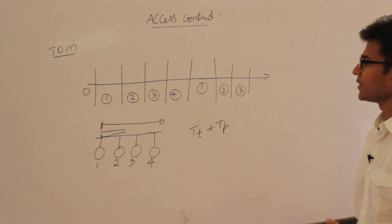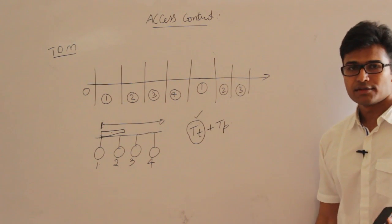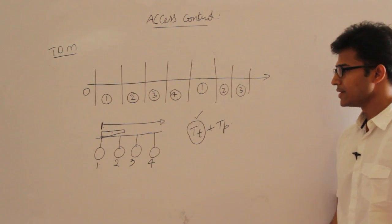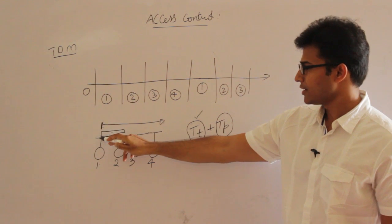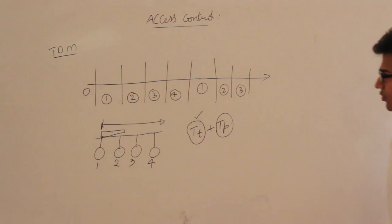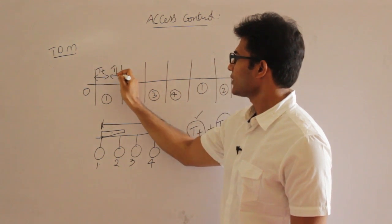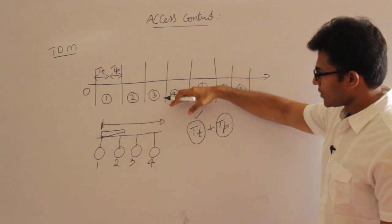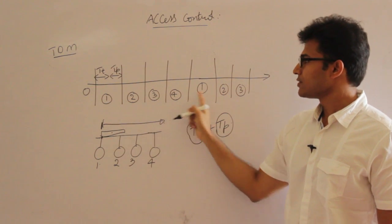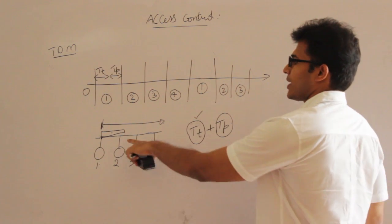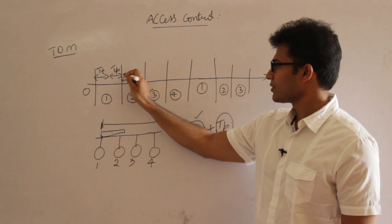For all these protocols, my assumption is that all stations send packets of the same size, so TT is constant for all packets. That is not a practical assumption, but it makes analysis easier. TP is the worst-case propagation time — if the station is at one end of the wire, the time for the bit to exit the other end is TP. So for every station the slot time is TT plus TP. After station one's slot is over, station two will get the same slot size TT plus TP.